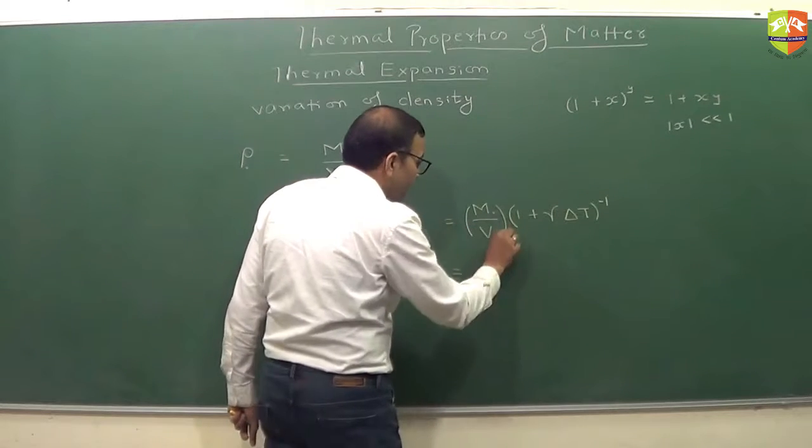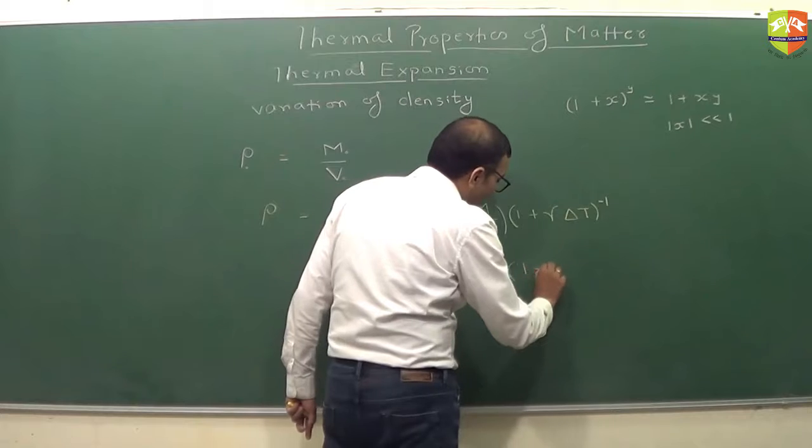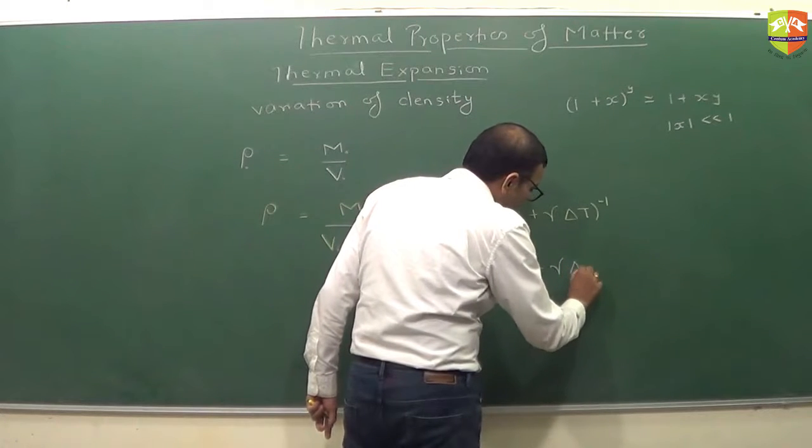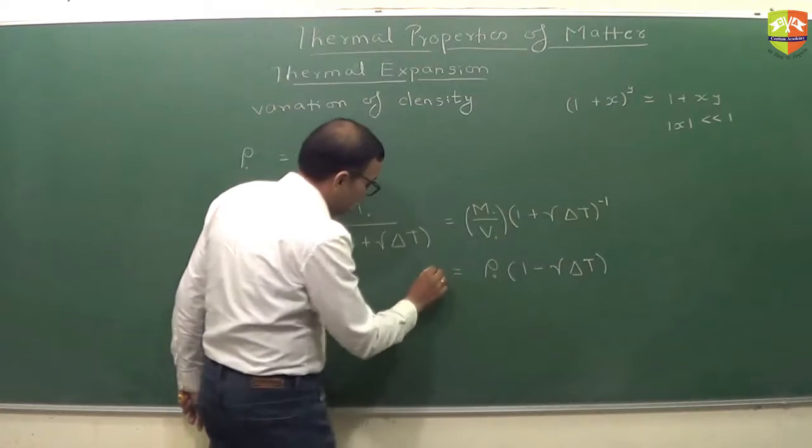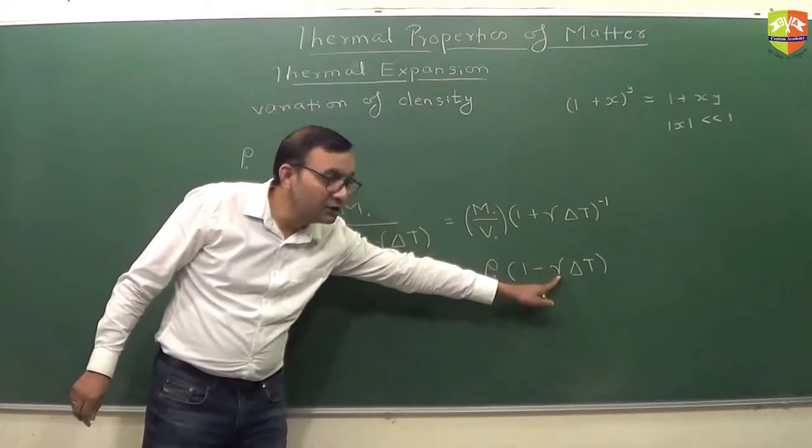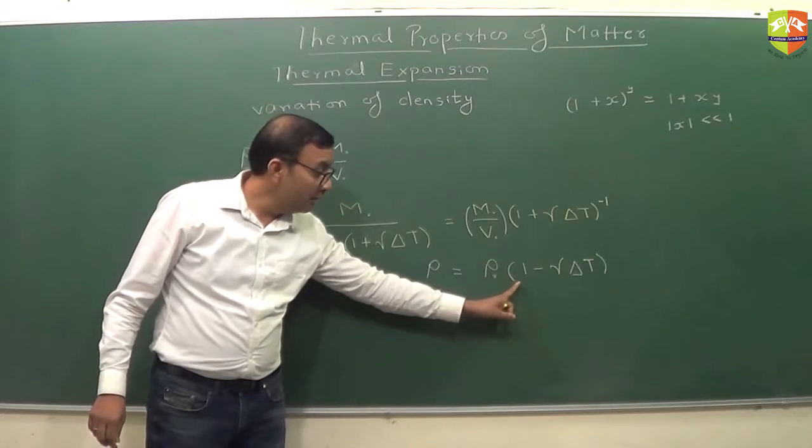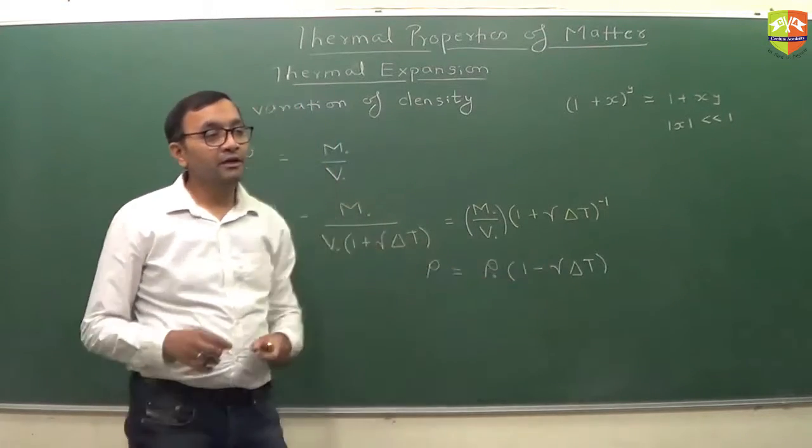M0 by V0 is rho0. So this is rho0 times 1 minus gamma delta t. Same volumetric expansion coefficient is coming. But density is original density into 1 minus gamma delta t.